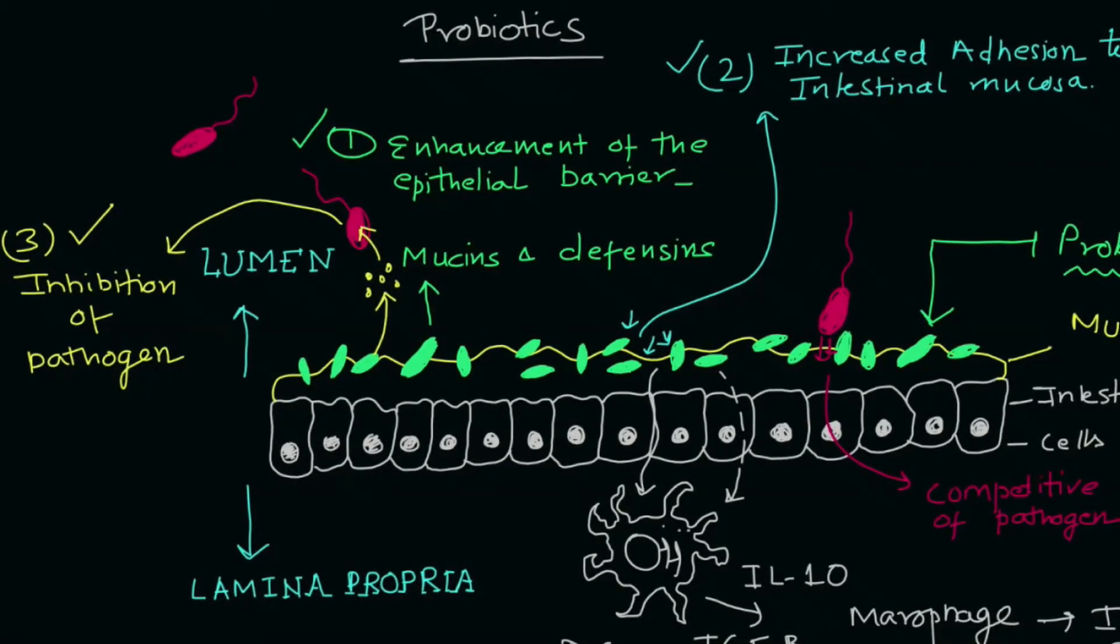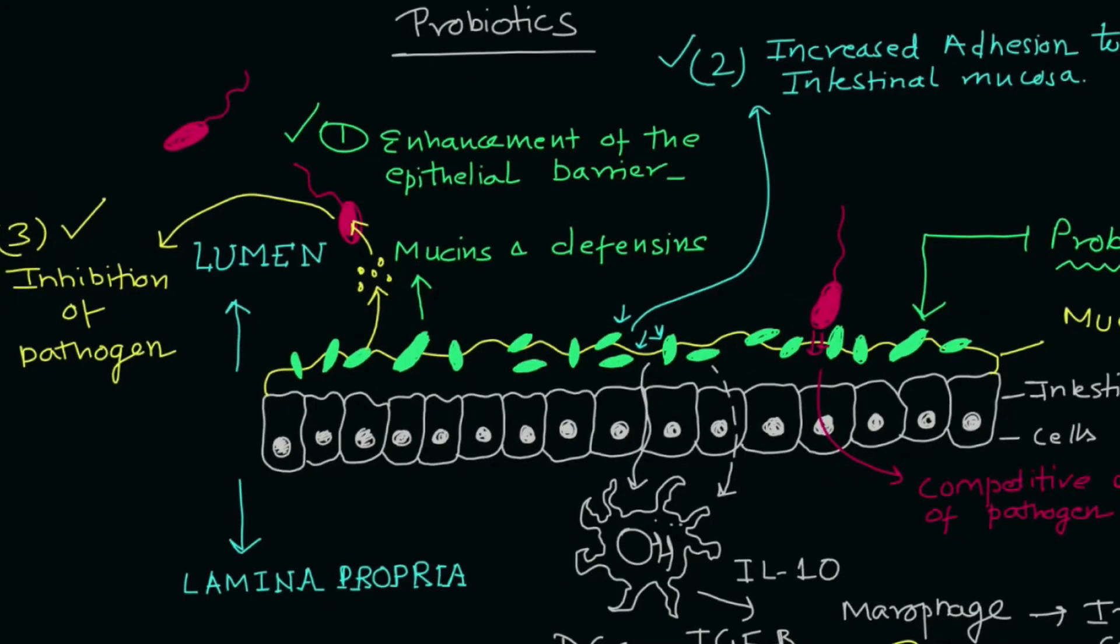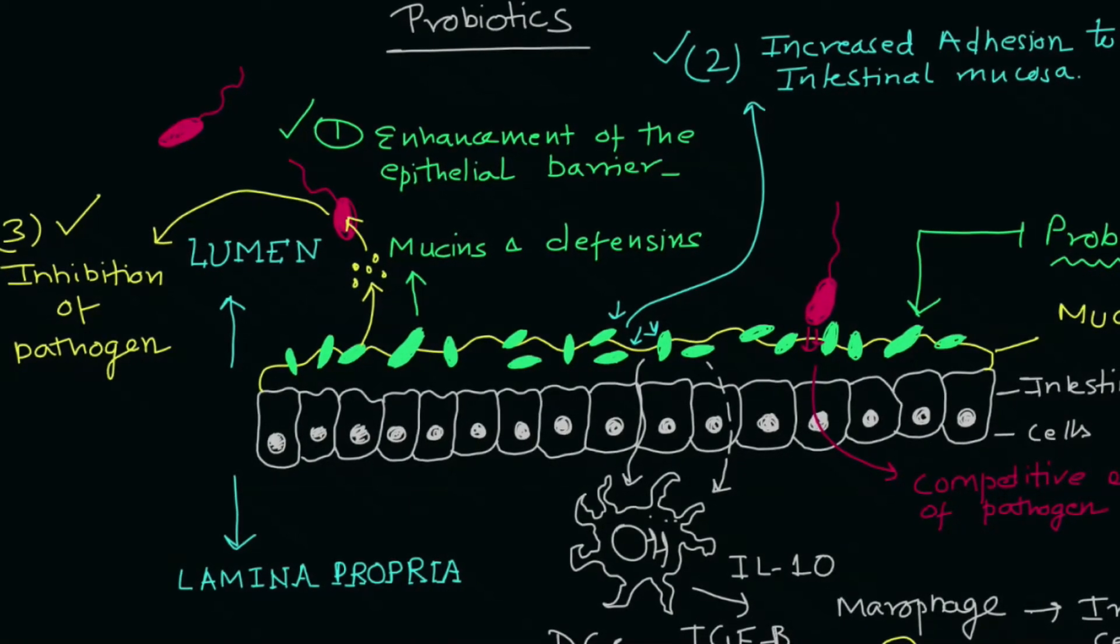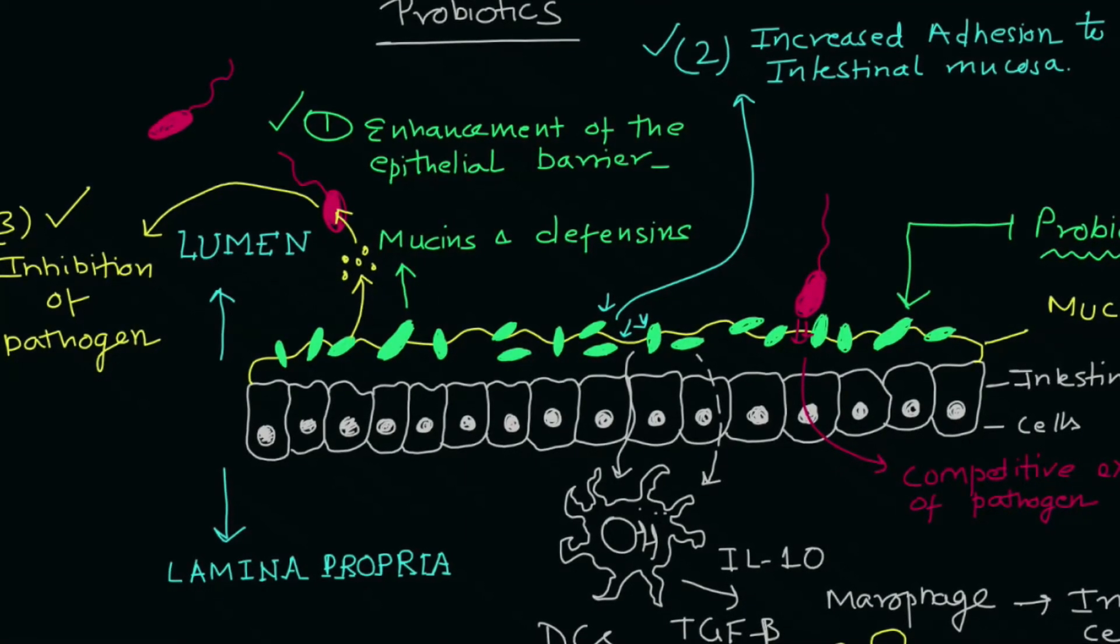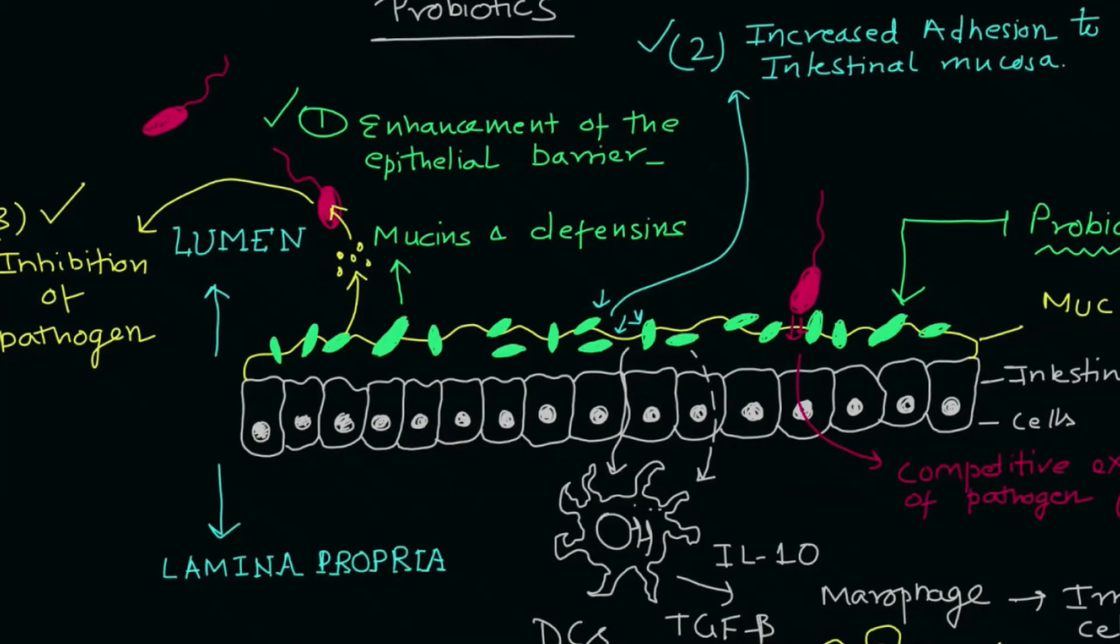We have also discussed the role of immune cells especially the dendritic cells by the production of IL-10, TGF-beta that can lead to the activation of the immune system.